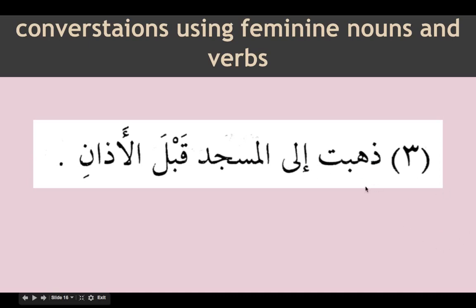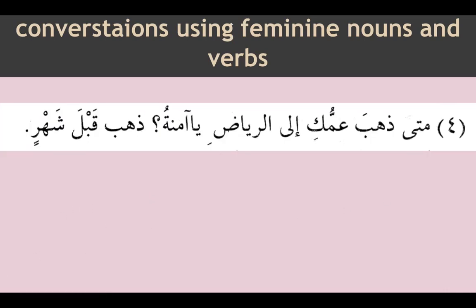Another example: zahabtu ilal masjidi qabla al-adhan — I went to the masjid before the adhan. Qabla al-adhan: qabla is zarf, al-adhan is mudaf ilaihi. Analyzing the full jumlah: zahaba is the fi'l, tu is the fa'il, ilal masjidi is jar and majroor, qabla is zarf, and al-adhan is mudaf ilaihi. Subhanallah — we can now analyze the whole sentence.